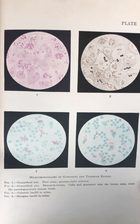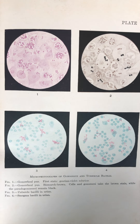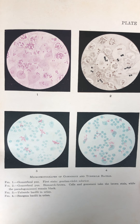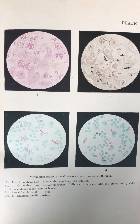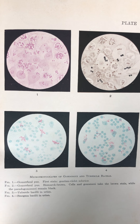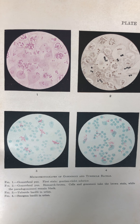Plate nine: micro-photographs of gonococci and tubercle bacilli. Figure one, gonorrheal pus, first stain, gentian violet solution. Figure two, gonorrheal pus, Bismarck brown. Cells and gonococci take the brown stain while the pseudogonococci remain black. Figure three, tubercle bacilli in urine. Figure four, smegma bacilli in urine.